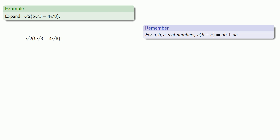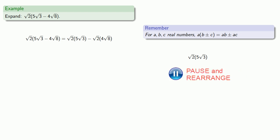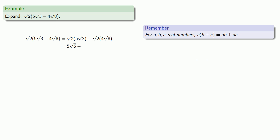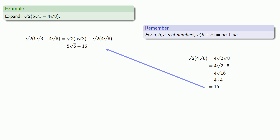Or we can try another one. As long as we're dealing with real numbers, the distributive property applies, so every term inside the parentheses is going to be multiplied by square root of 2. The product of square roots is the square root of a product, so we'll rearrange our factors and simplify.